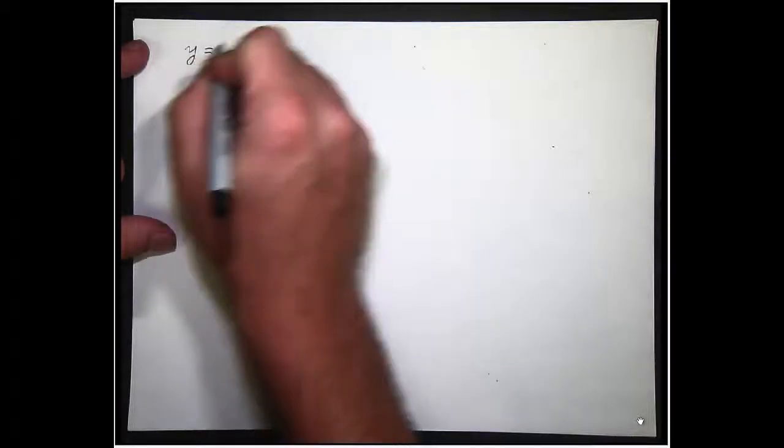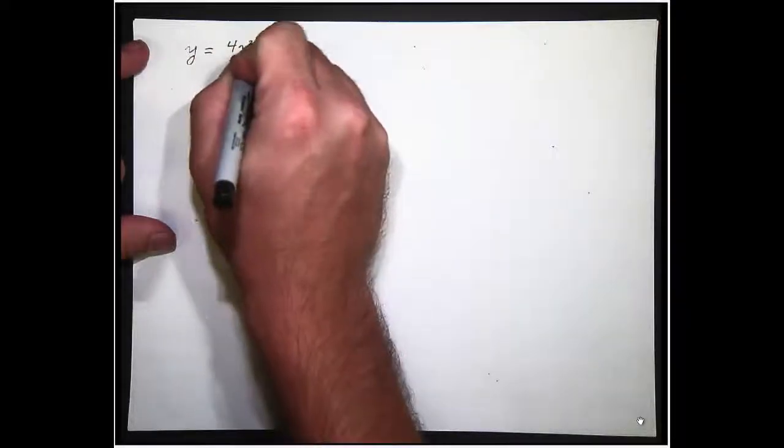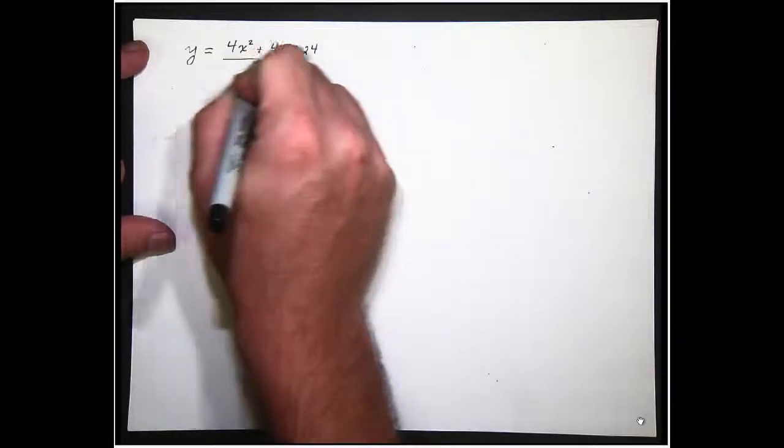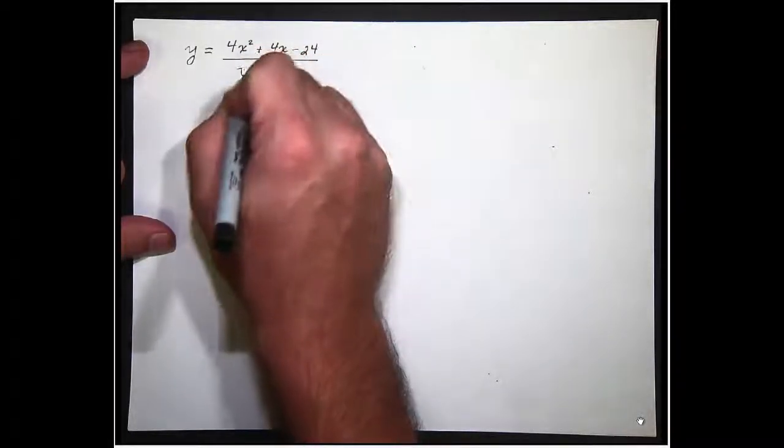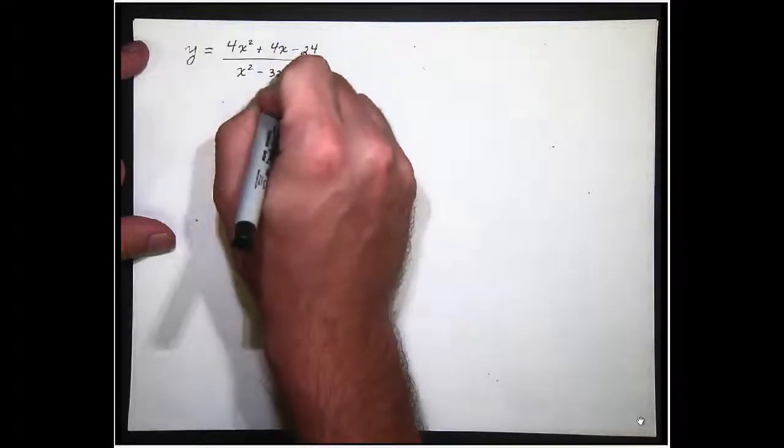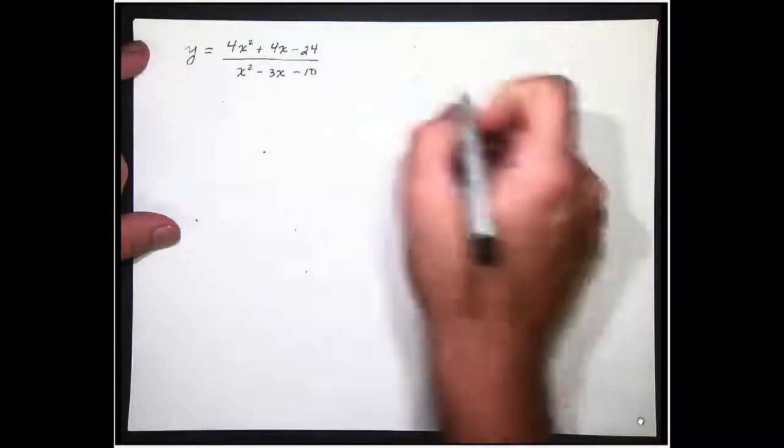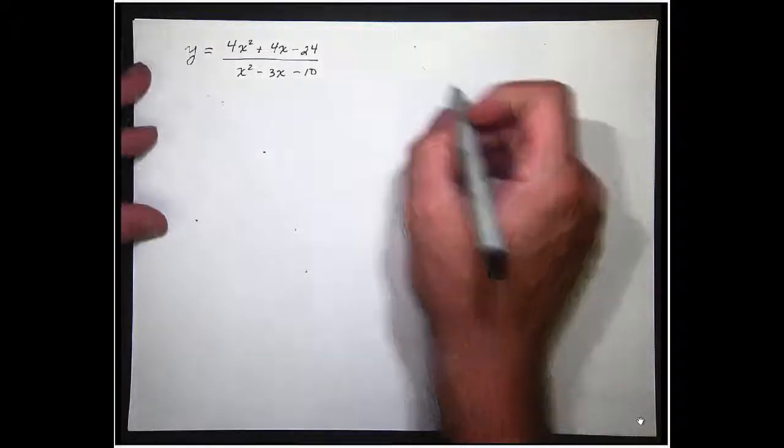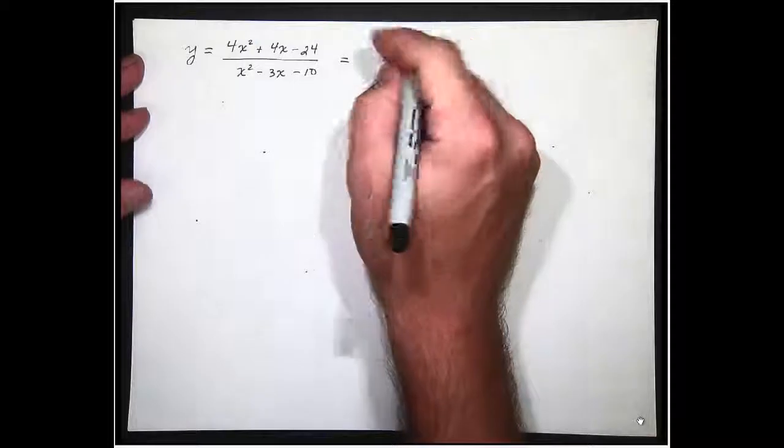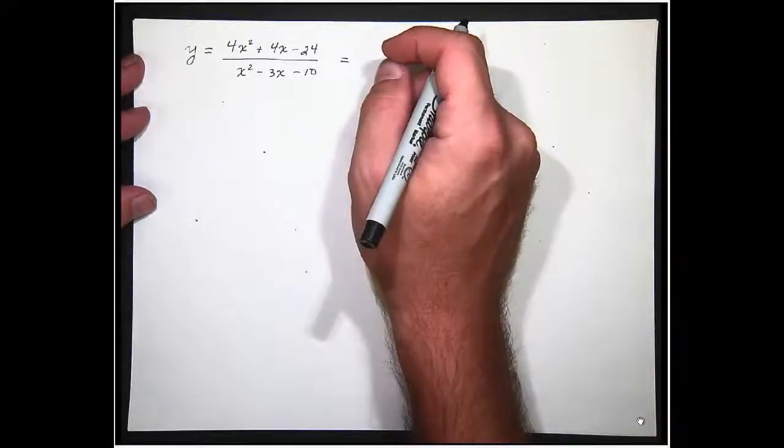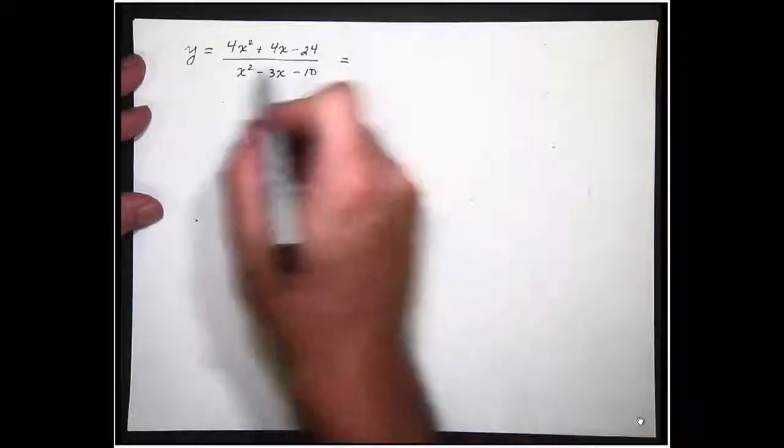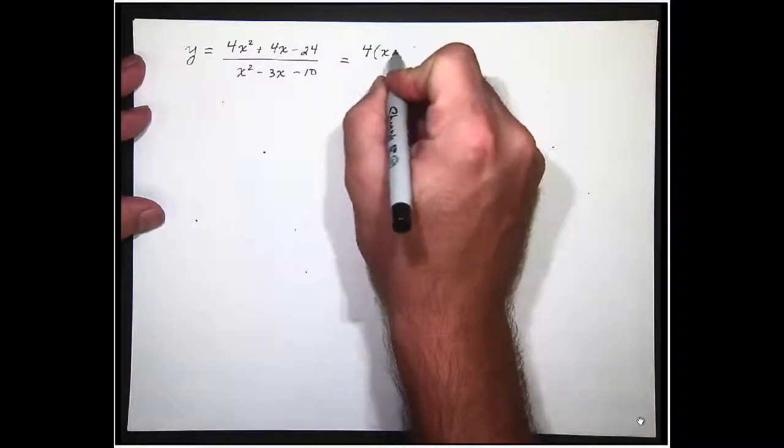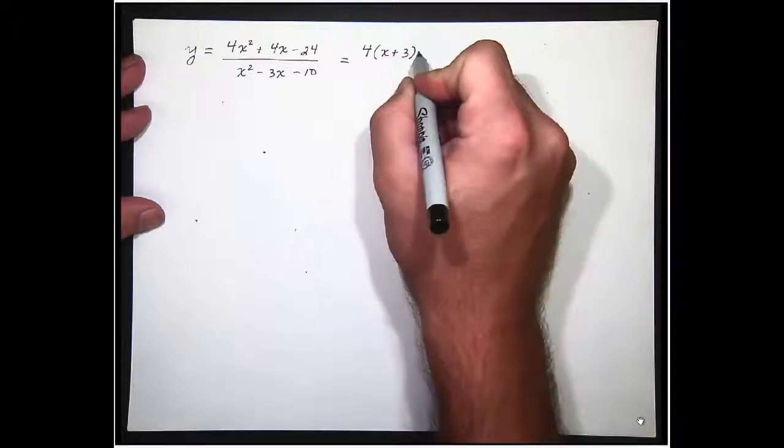y equals 4x² plus 4x minus 24 all over x² minus 3x minus 10. Your first task when you are given one of these should be to factor the numerator and the denominator completely. So I'm going to factor this completely and I've done it already so I'm just going to go like this.